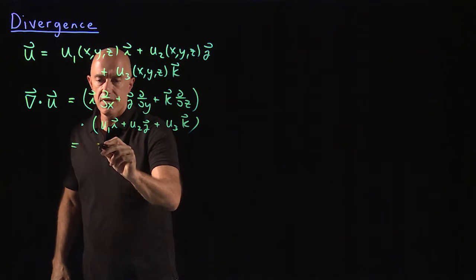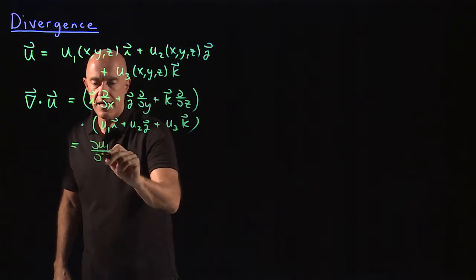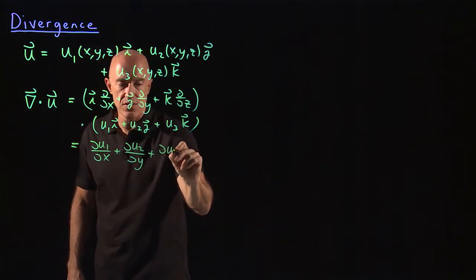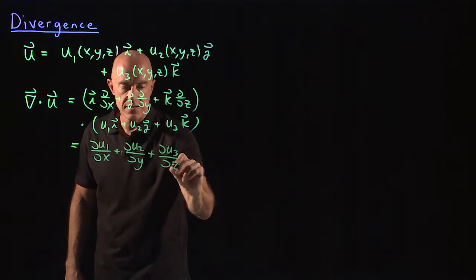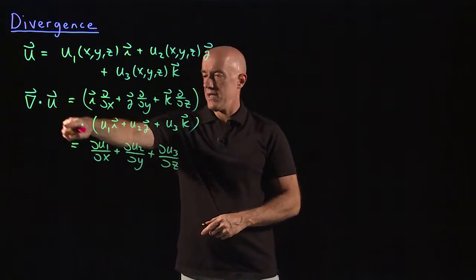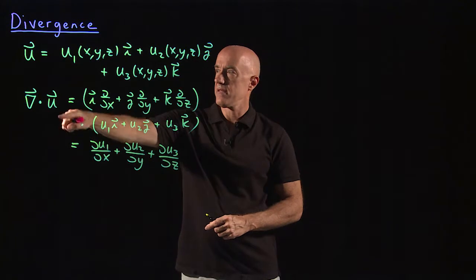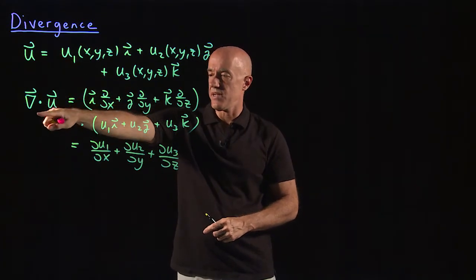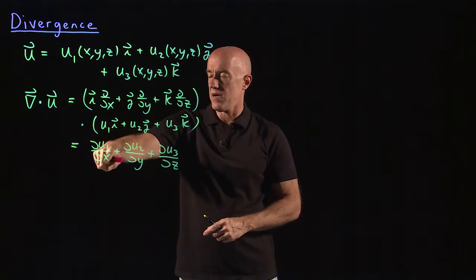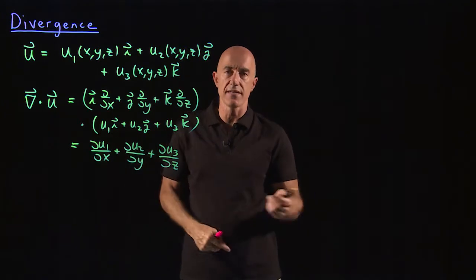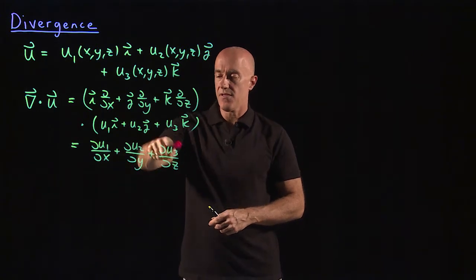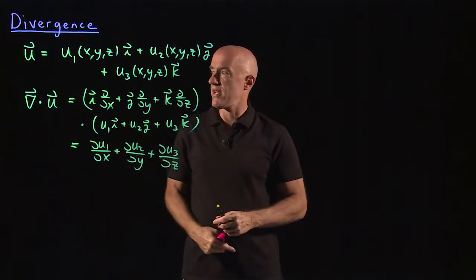So this becomes ∂u1/∂x plus ∂u2/∂y plus ∂u3/∂z. That's the divergence. Del dot u is a scalar field — u is a vector field. It equals the first component of u differentiated with respect to x, the second with respect to y, and the third with respect to z.